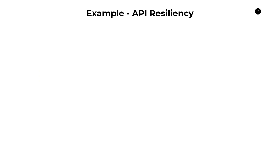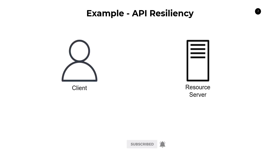First, I want to talk about a prerequisite concept called API resiliency. API resiliency refers to the concept that we build APIs that are able to recover from failure. There are a bunch of different ways in which this applies. Say we have a client and a resource server providing some functionality, and we're working in the context of bank accounts — so we have an API called 'create bank account'.